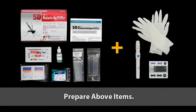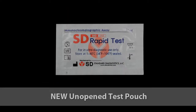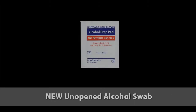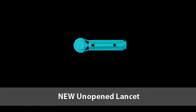These materials should be prepared before starting the test: a new unopened test pouch, a new disposable inverted cup or capillary pipette, a new unopened alcohol swab, and a new unopened lancet.